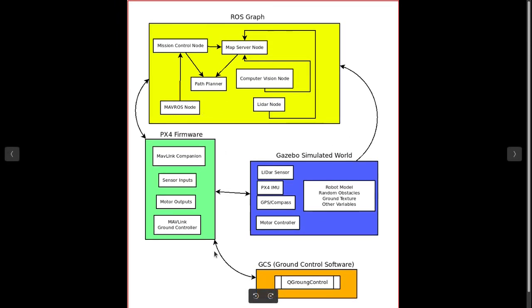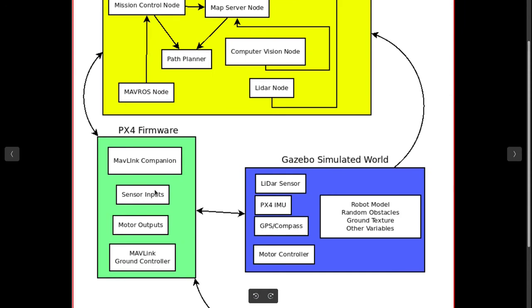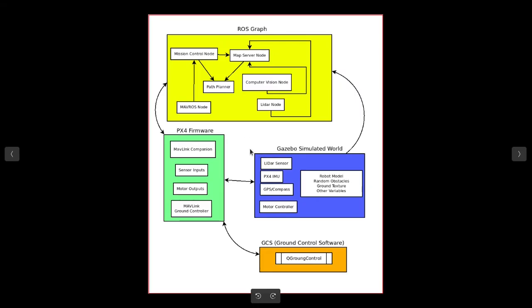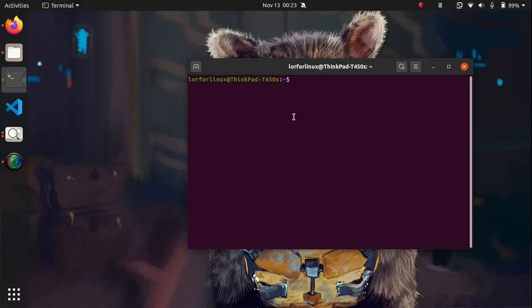In the real world, the ground control software may connect to the drone through Wi-Fi or any other wireless connection. During the development process it can also be connected via a USB-to-UART bridge. The same PX4 firmware will also work on a real-world drone. That's it for PX4 on software-in-the-loop — let's see a demo now.